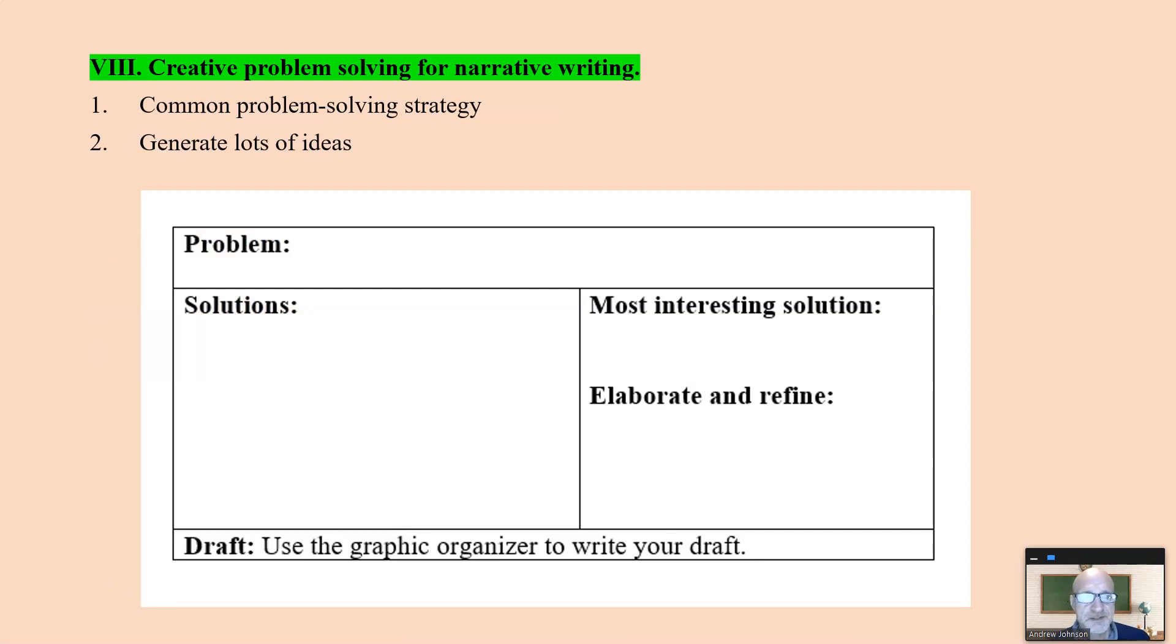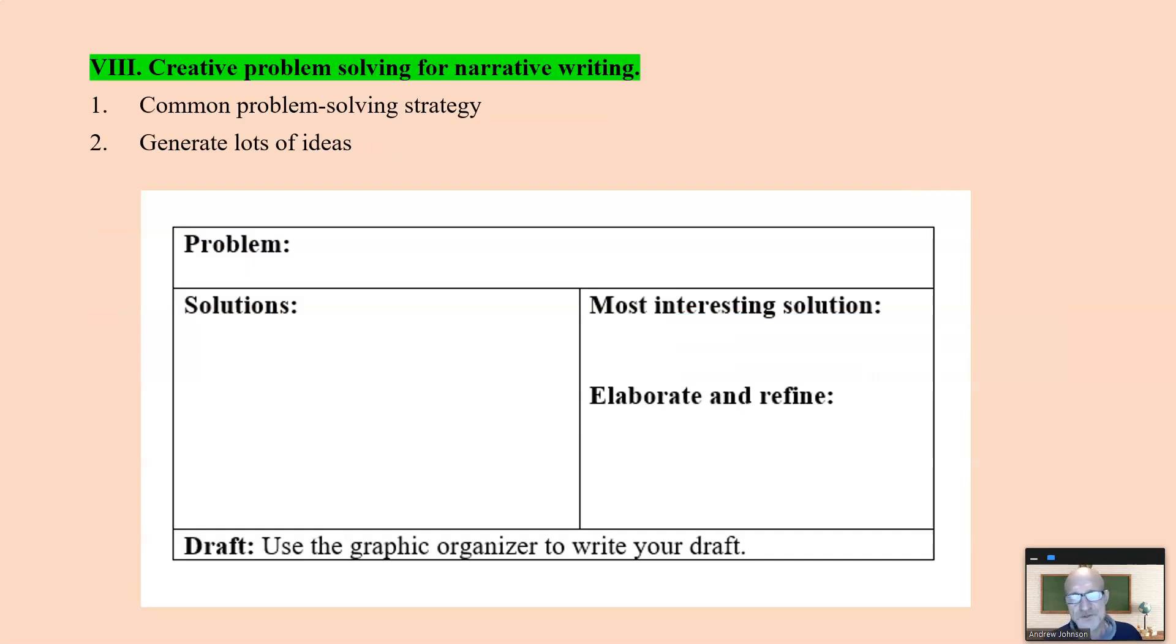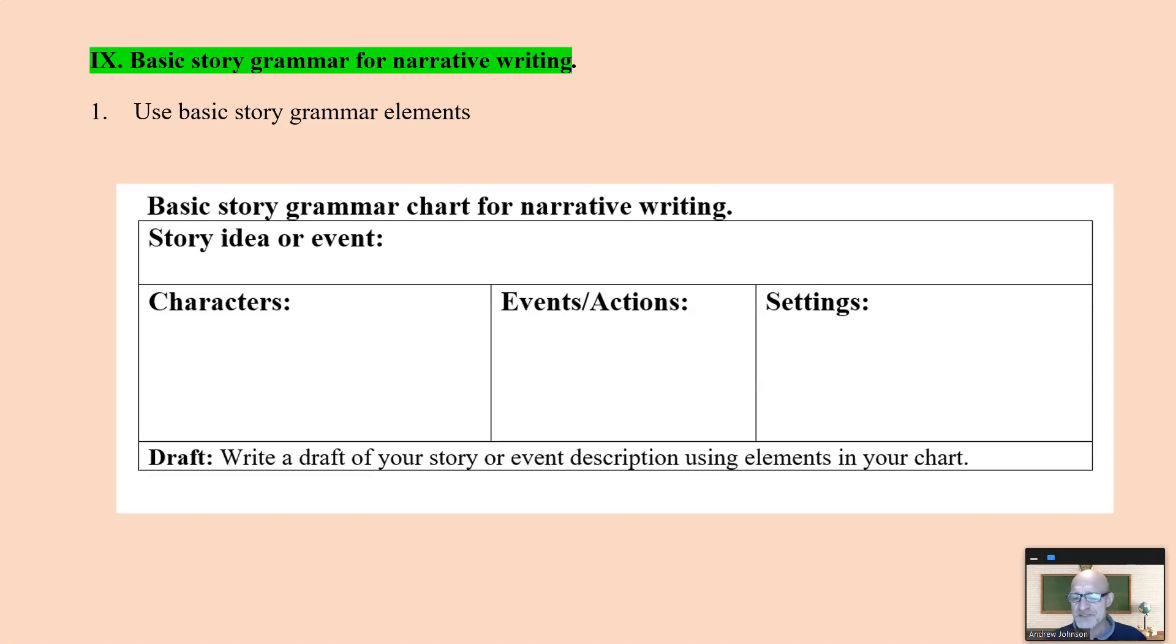Creative problem solving. This is another common problem-solving idea. This is good for fiction writing. Here's the problem, you generate a whole bunch of solutions, you use the most interesting solution for your story, and then you elaborate and refine. This becomes the basis for your draft. If you're writing a personal narrative as it's happening, this is a problem I'm experiencing, here are a bunch of solutions, this will be the most interesting solution or the most workable solution. This is for narrative writing, probably best for fiction, narrative fiction, but you could also use it for your own life as a problem-solving strategy. And again, adopt and adapt. Not all these are going to work for everyone, but there should be at least two good ideas here that you can use.